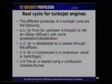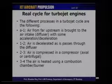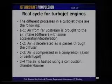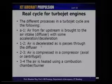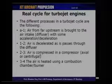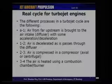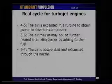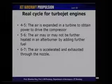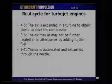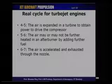Looking at the individual processes: from 'a' to one, the air is compressed in the free stream itself before entering the diffuser. Between one and two the air is decelerated as it passes through the diffuser. Between two and three we have the compressor — either axial or centrifugal. Three to four is heat addition in the combustion chamber. Four to five is expansion through the turbine generating work to drive the compressor. Five to six is the afterburner, which may or may not be present. Six to seven, the air is accelerated and exhausted through the nozzle, completing the expansion.